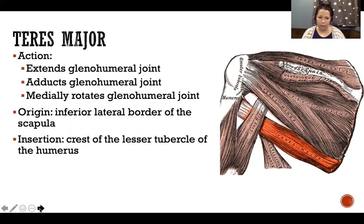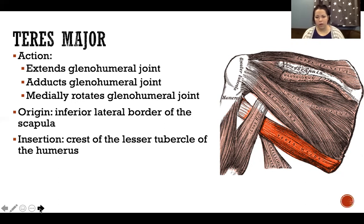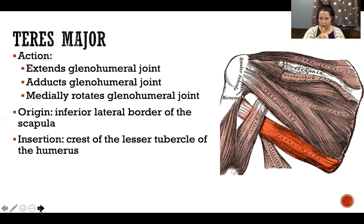Teres major goes underneath the arm just like lat, giving it those same actions. In this picture you can also see the long head of triceps — the only head that crosses the shoulder — threading between teres major going to the anterior side and teres minor going to the posterior side, up to the infraglenoid tubercle of the scapula.